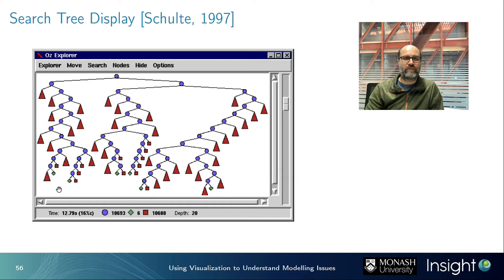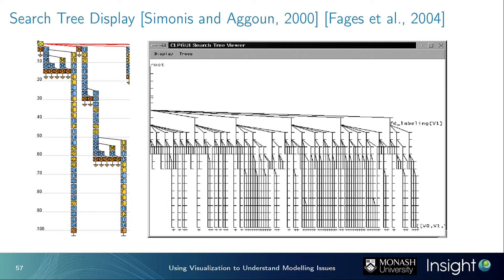There have been many other approaches to representing search trees. For example, the CLP GUI from the constrained logic programming context has a quite different, more linear tree display. Another approach draws information directly into each node, showing the depth of the tree, making it easier to compare across depth levels. iLogSolver, predecessor to CP Optimizer, also had an integrated solver debugger with a similar color scheme and triangles for failed subtrees.